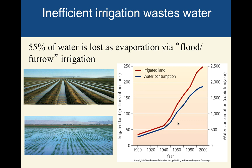Part of the problem is that we are so inefficient with the irrigation methods we use. We use flood and furrow irrigation instead of drip or sprinkler systems. Over half of the water is lost to evaporation with those two methods, which forces you to use enormous amounts of water even though you're not being very efficient.